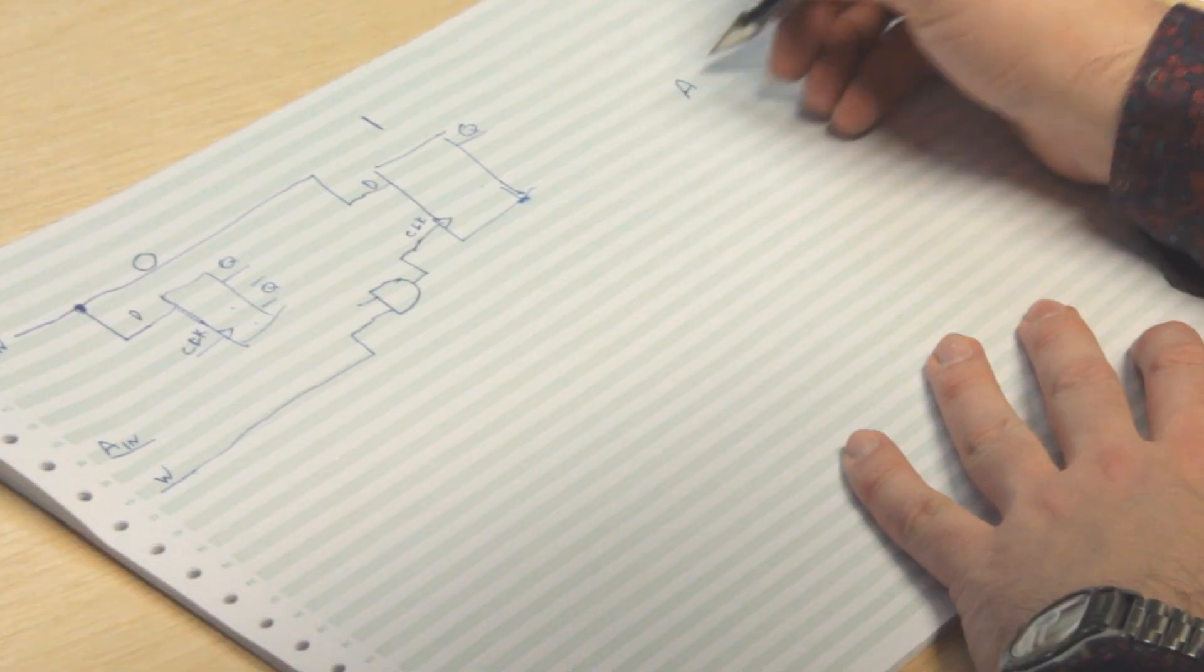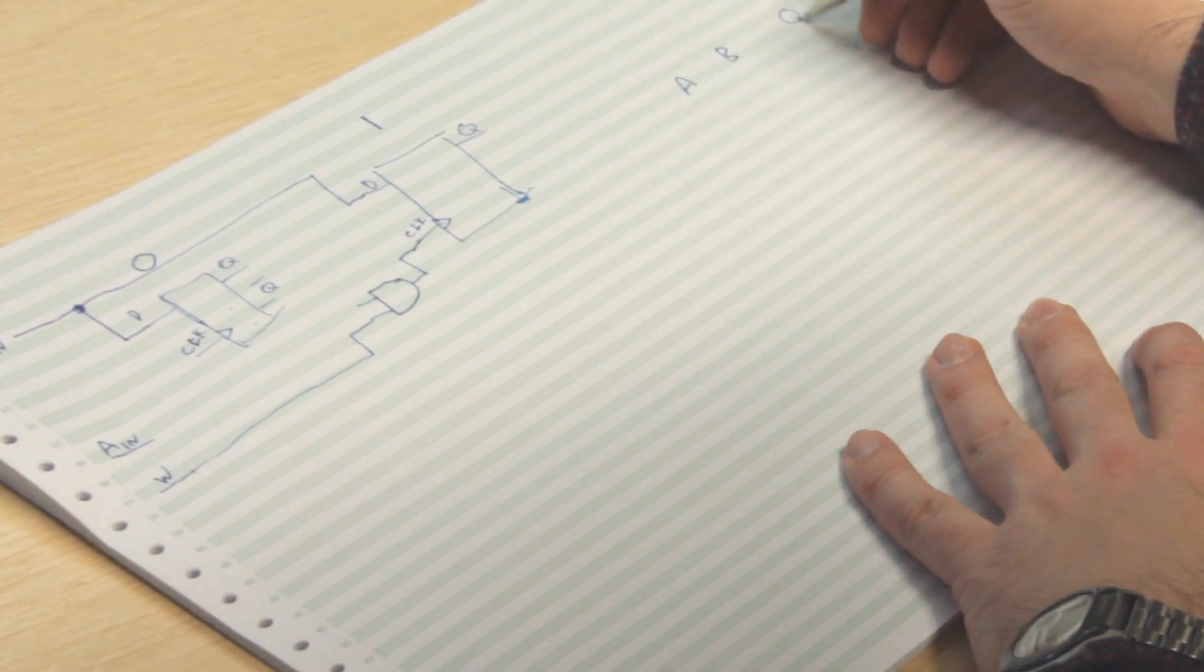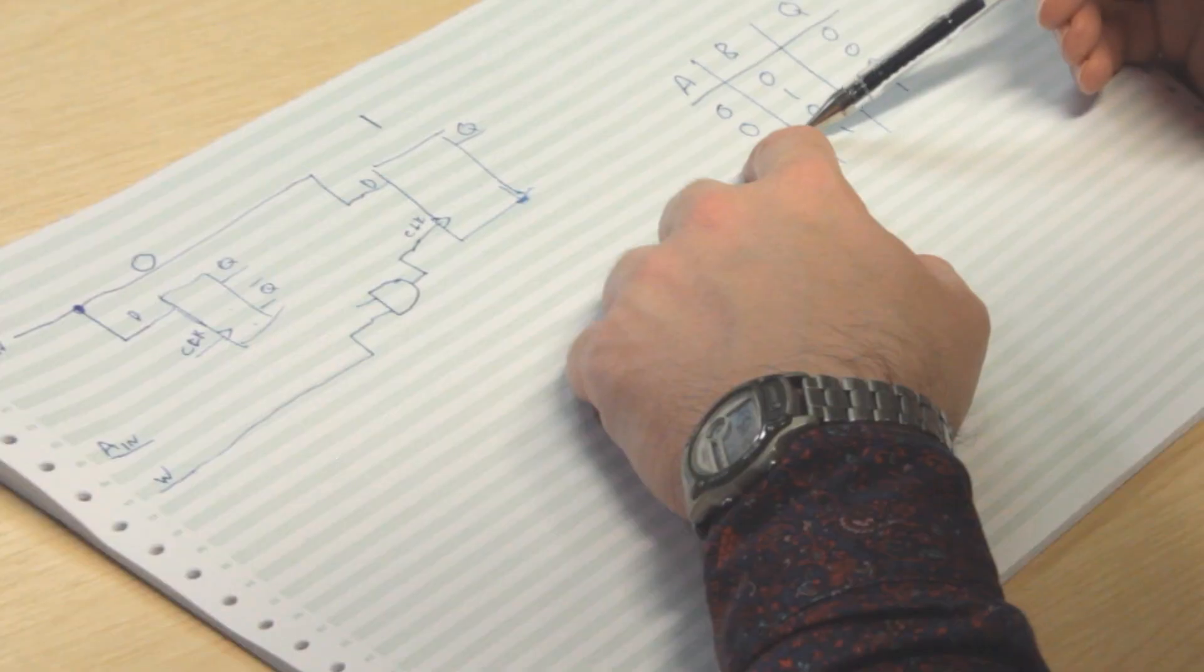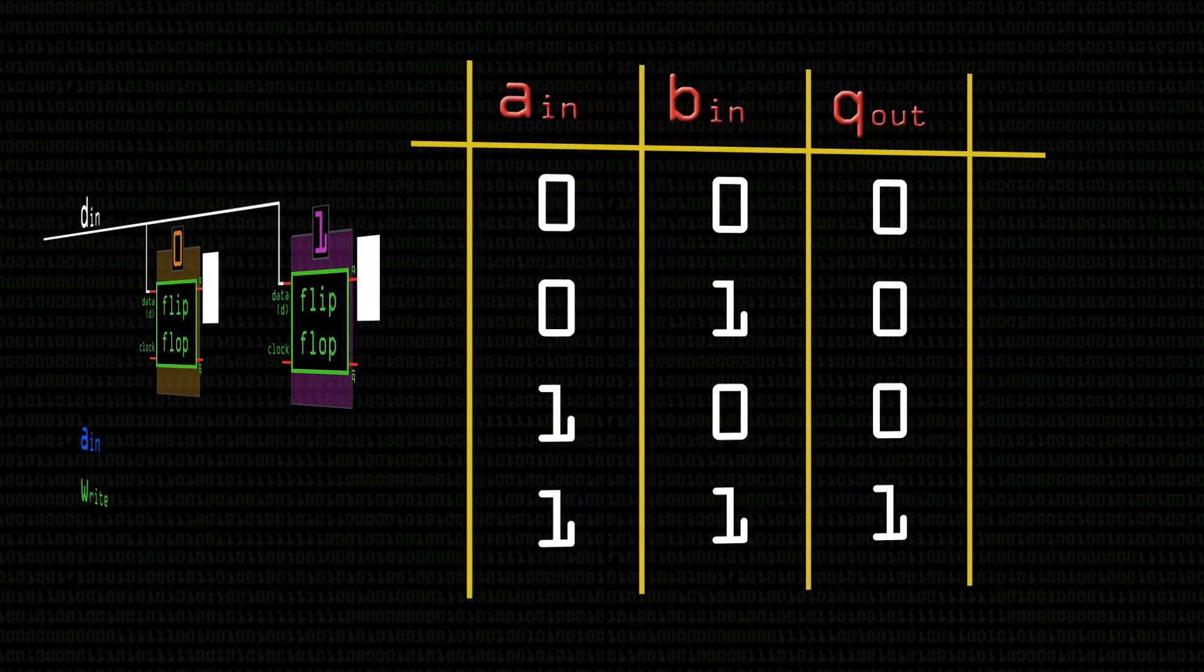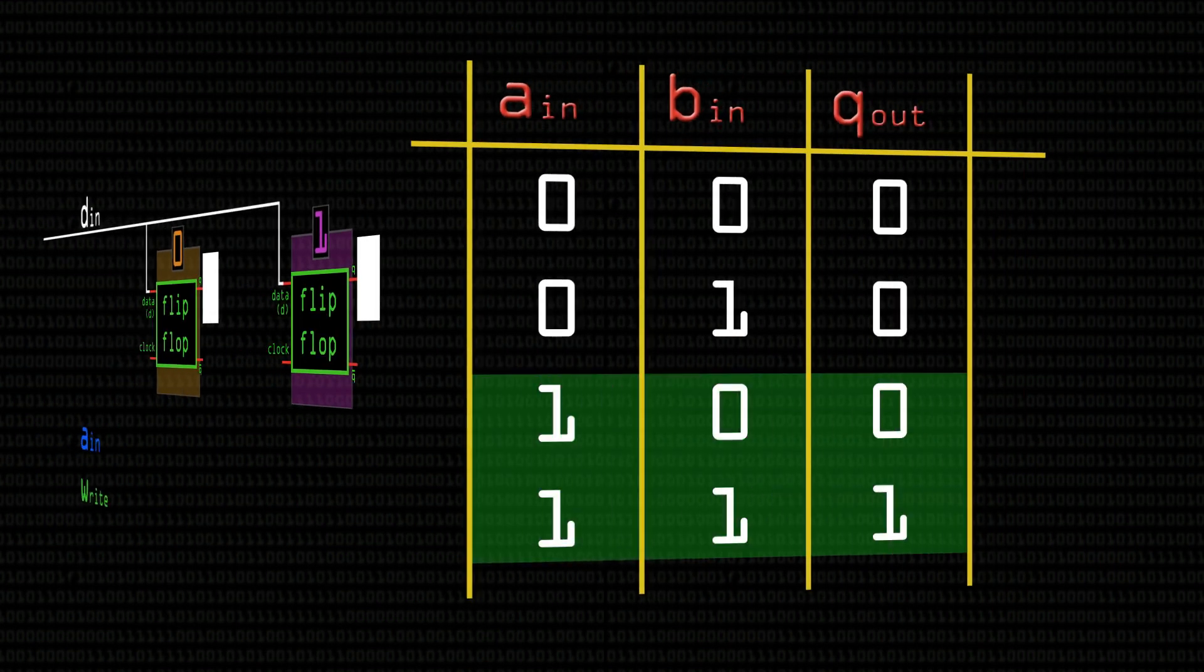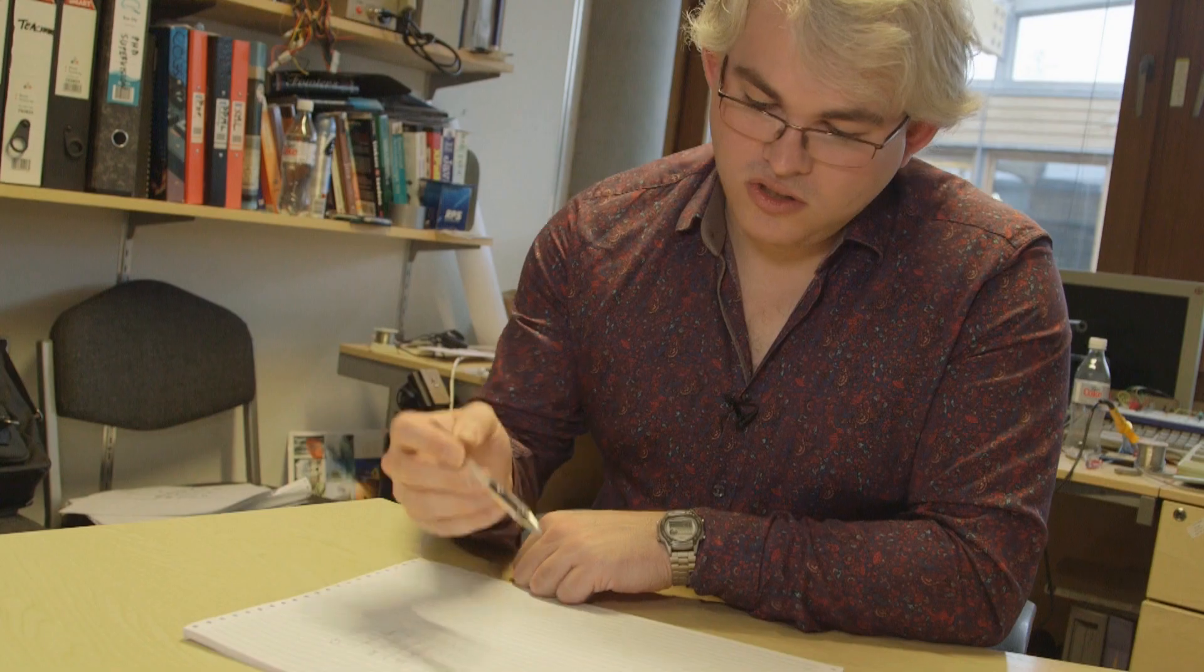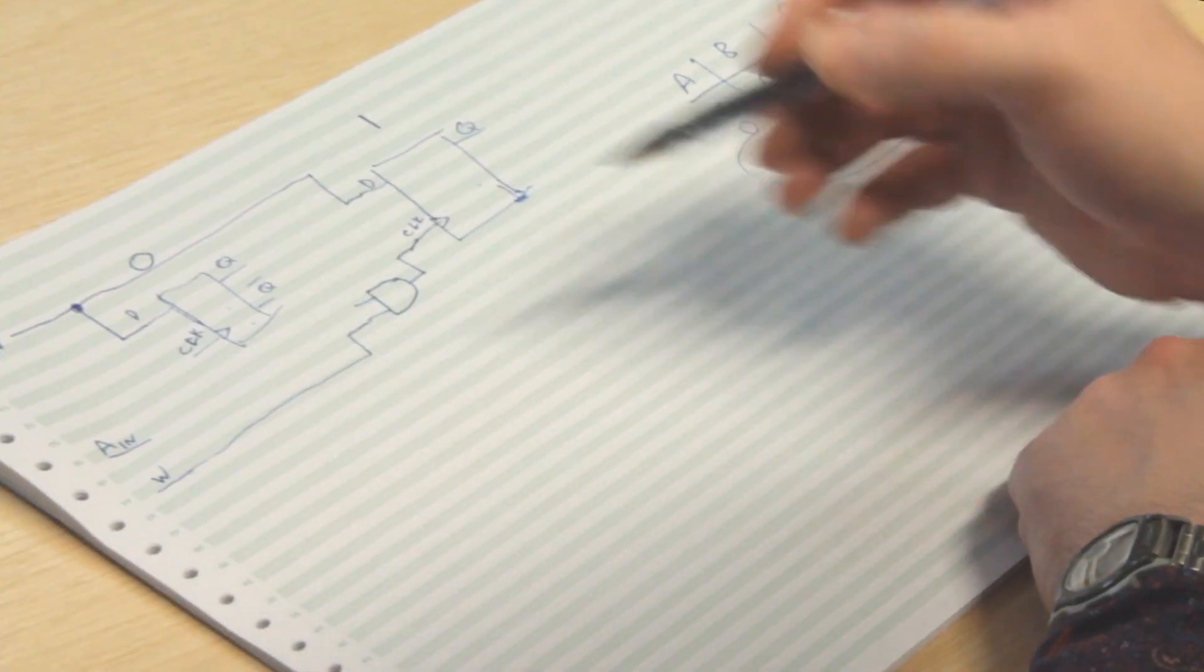Now if we think about an AND gate again, it's got two inputs, A and B, and an output, which again we'll use Q. So if we look here, we see that whenever A is one, the output matches B. So when A is one and B is zero, the output is zero. When A is one and B is one, the output is one. So we can use this fact, these values here, in our circuit here.